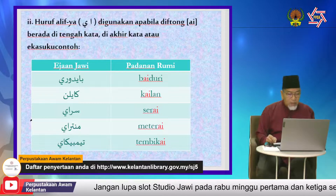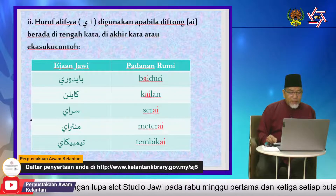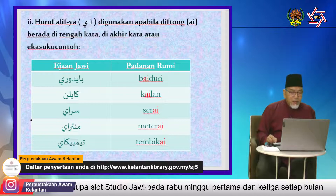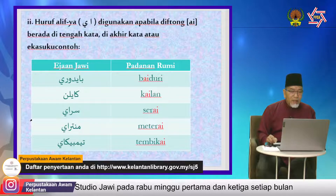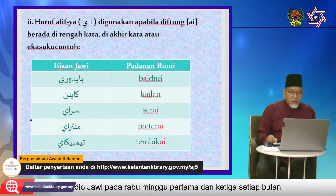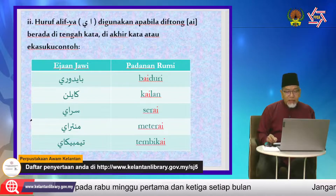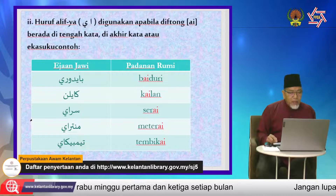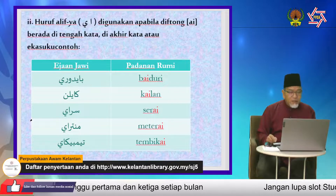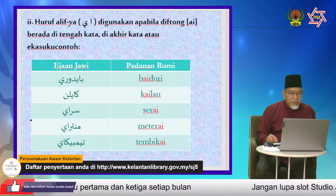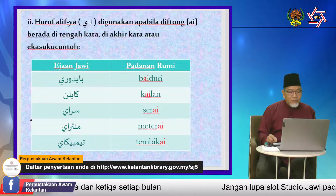Kemudian kita eja 'kailan': ejaan Jawi ka, alif, lam, ya, lam, nun — padanan rumi K-A-I-L-I-N, kailan. Yang berwarna merah itu ialah AI untuk diftong yang berada di tengah kata. Perkataan 'serai' pula ialah contoh AI di akhir kata: ejaan Jawi sin, ra, alif, lam, ya — padanan rumi S-E-R-A-I, serai. Ejaan lama serai: sin, ra, ya sahaja — tanpa alif.